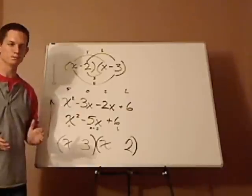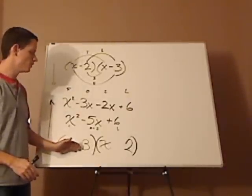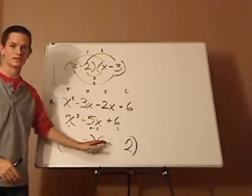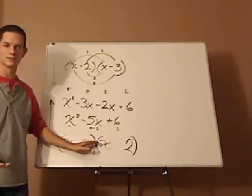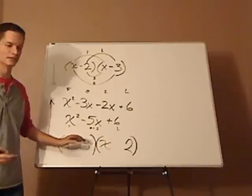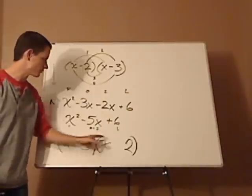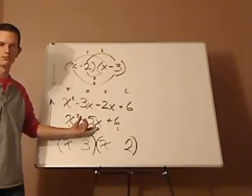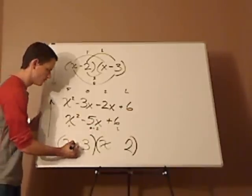Since you're multiplying it, you know that if they're the same, if it's positive, the result, then it's the same sign. So it either has to be plus plus or minus minus. You look at your middle term, it has to be minus minus.